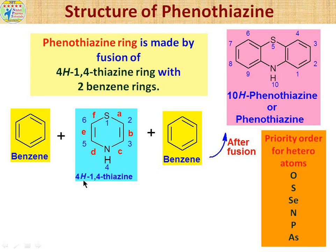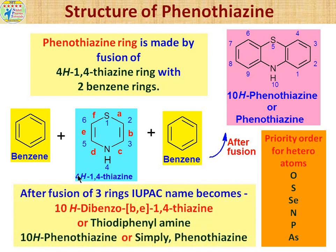Also, note that '4H' is mentioned here, representing the hydrogen atom present at the fourth position. The thiazine ring system has a total of six bonds, labeled A, B, C, D, E, and F. When we fuse all three rings together, we get the phenothiazine ring, and both benzene rings fuse with the thiazine ring through the B and E bond sides.